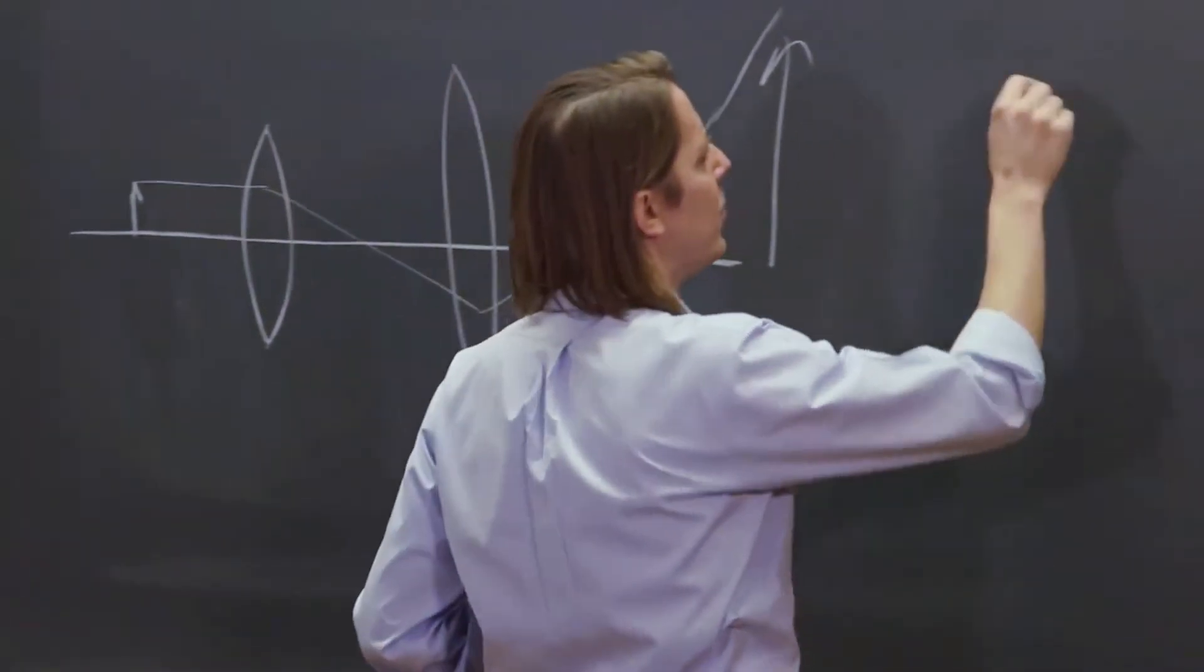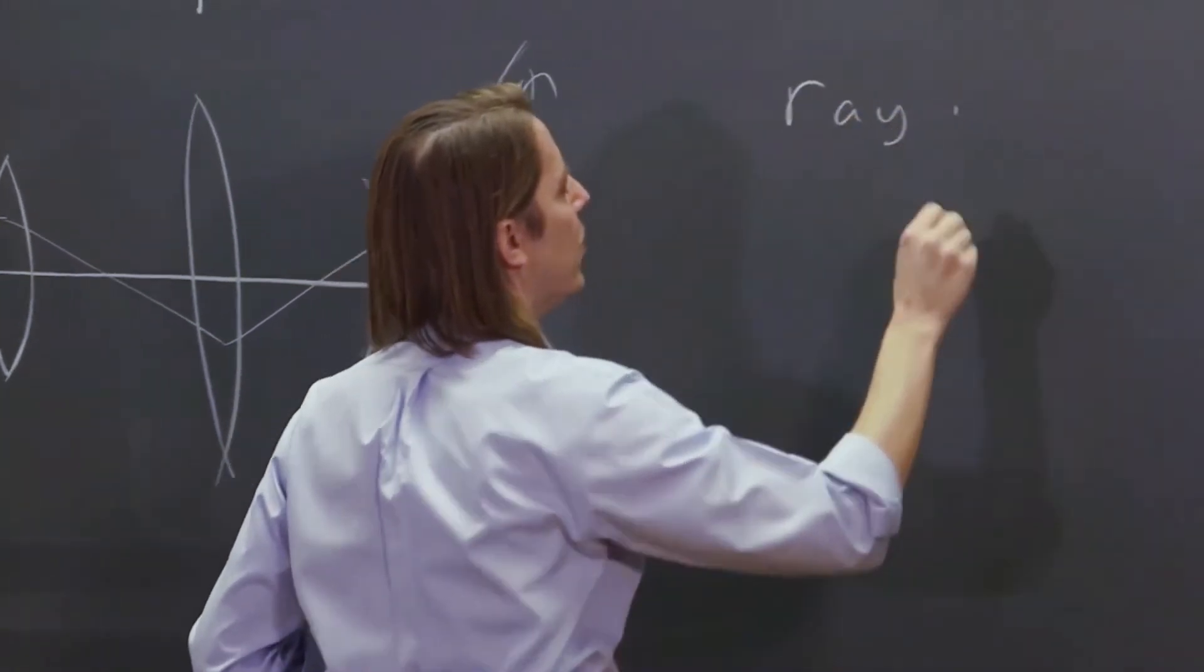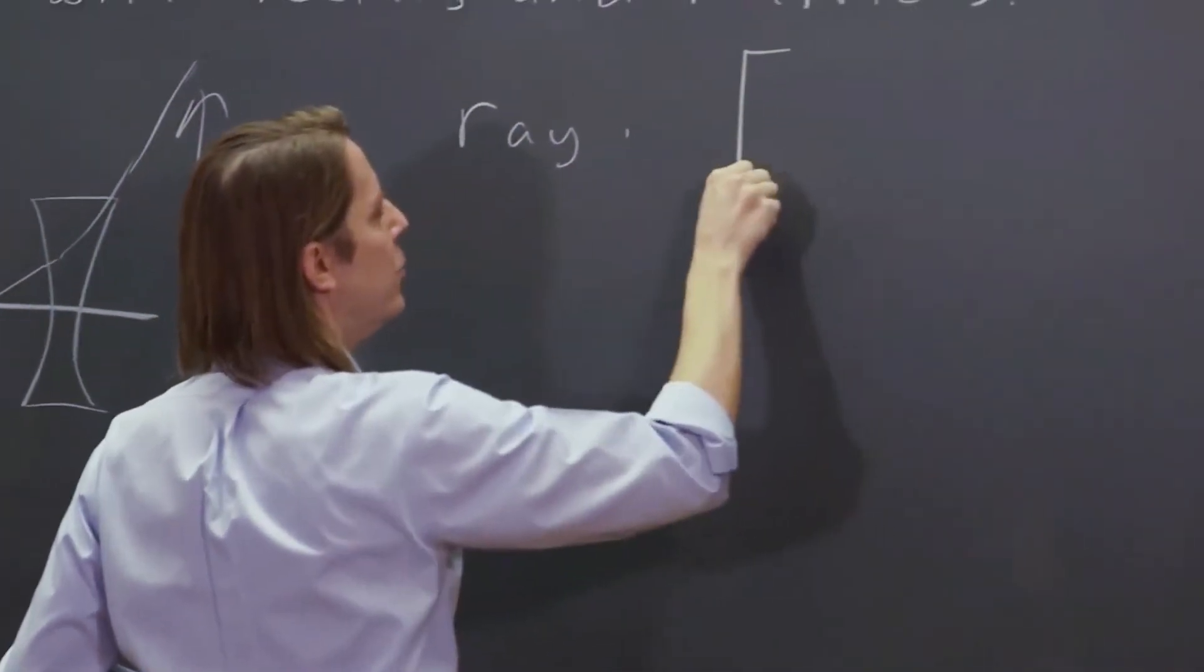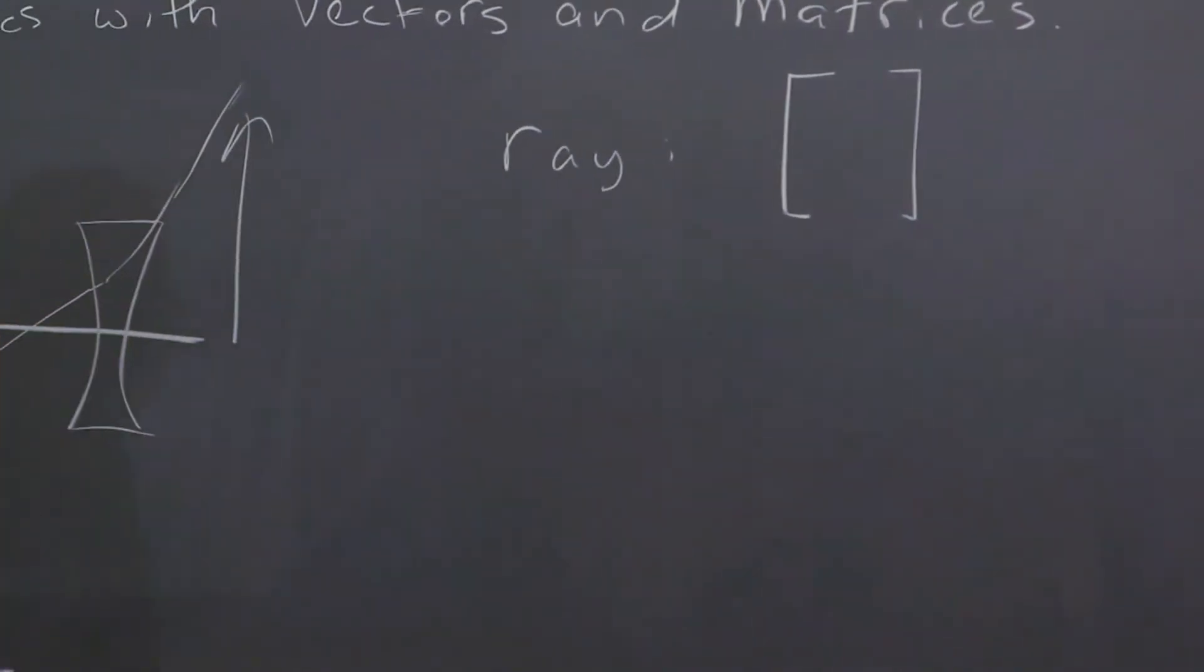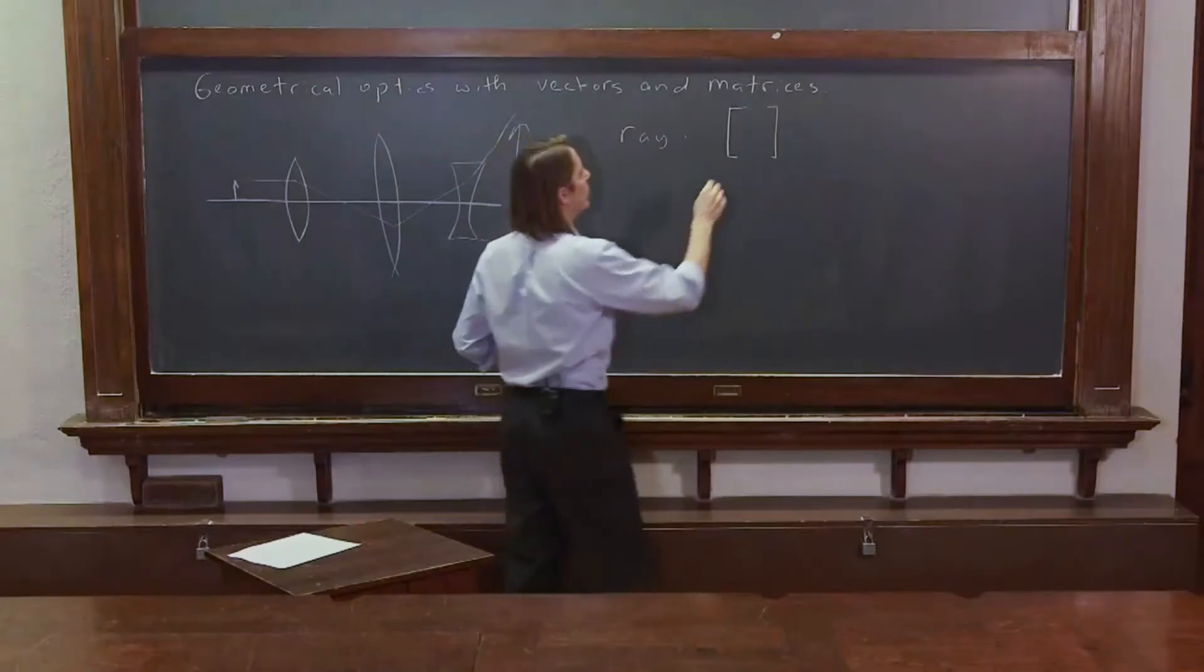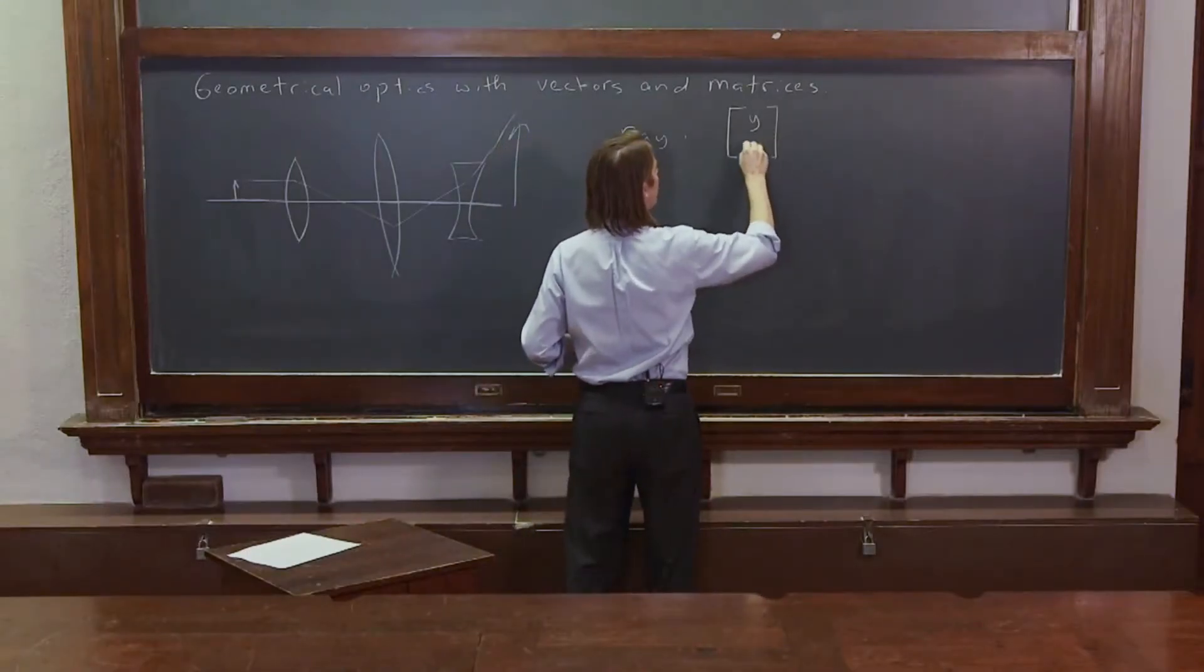So first, let's start with a ray. How do we describe a ray? We do it with a vector, which we just write as a little column with two entries. One is Y and one is alpha.